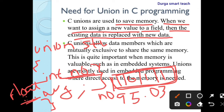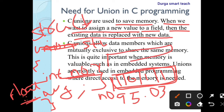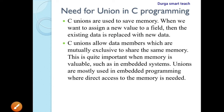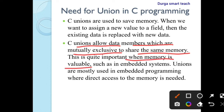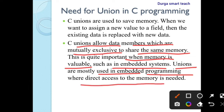Unions are used to save memory. But in structure, if you declare this as a struct 'student', for integer it occupies 4 bytes and for float it occupies 4 bytes — so memory is wasted. But in union, it saves memory. Unions allow data members which are mutually exclusive to share the memory. This is quite important when memory is valuable, such as in embedded systems. Unions are mostly used in embedded programming where direct access to memory is needed.